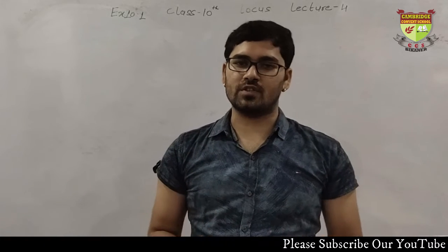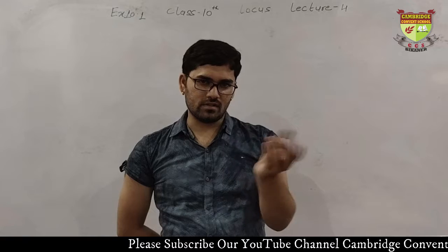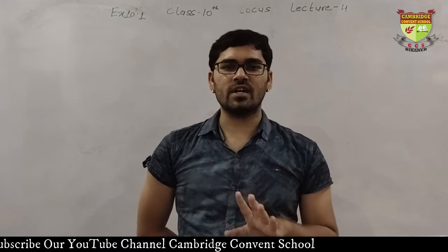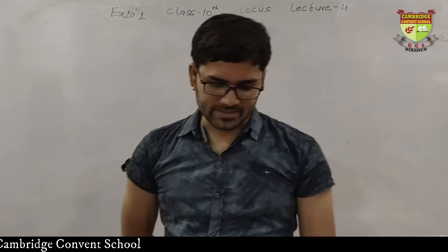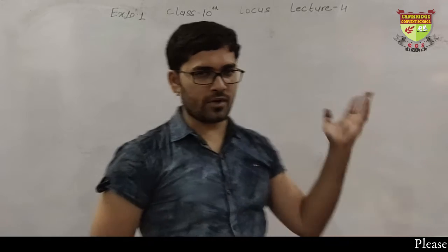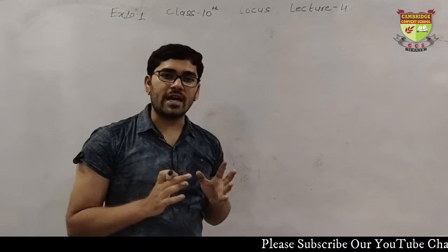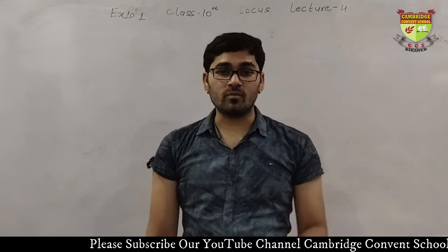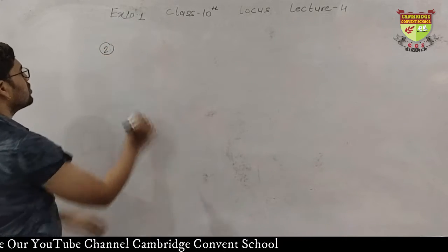Today we are going to do further questions of Exercise 10.1. So far we have done one theorem, some fundamental concepts, and two past questions of Exercise 10.1. Right now we are going to start from Question Number 2, which says: the diagonals of a quadrilateral bisect each other — prove that the given quadrilateral is a parallelogram.